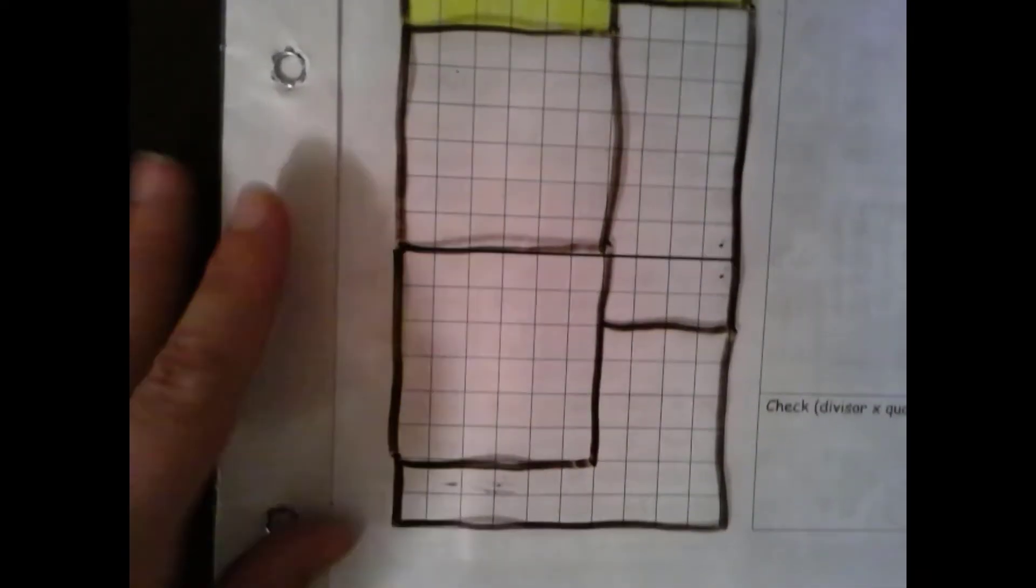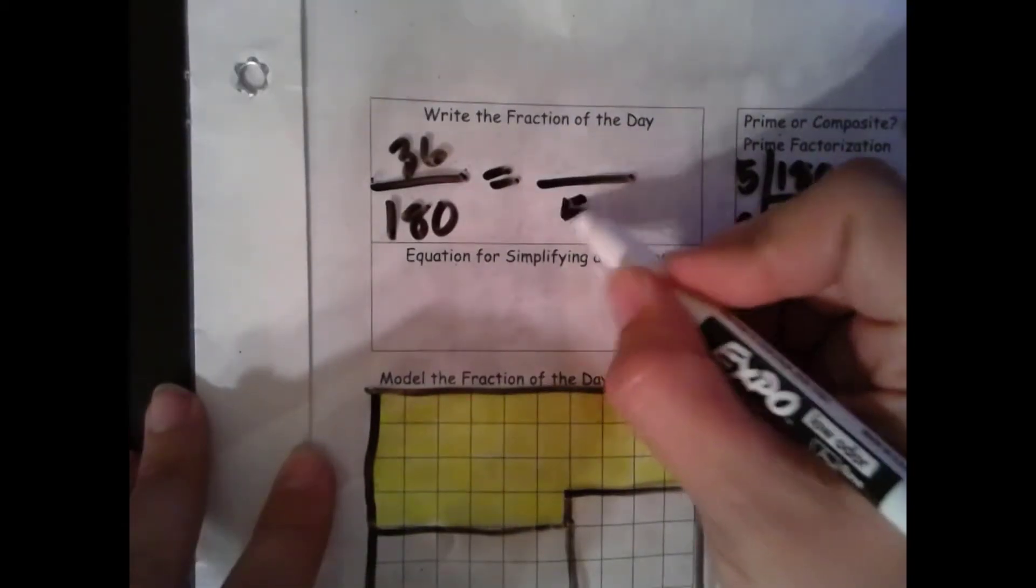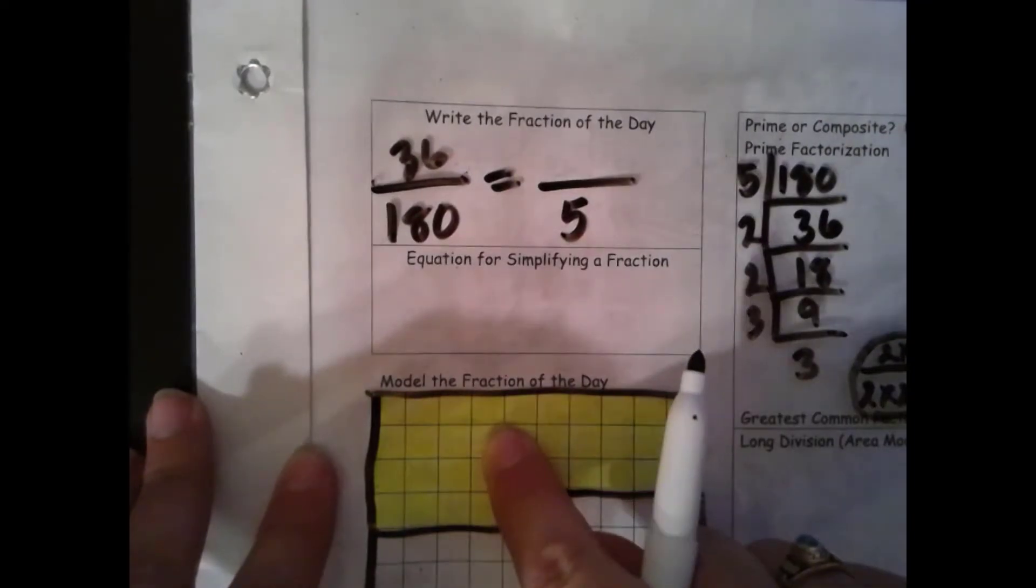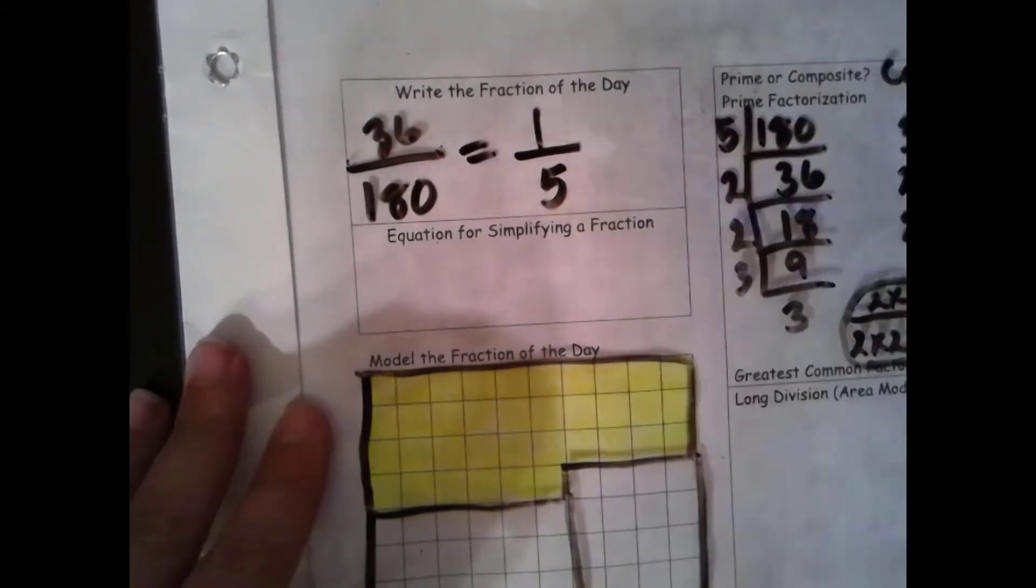Let's count our total. We have 1, 2, 3, 4, 5. 5 total groups of 36. And we have 1 of them shaded in.